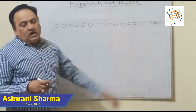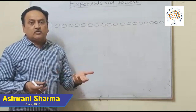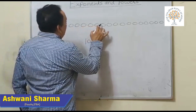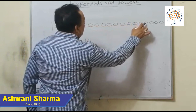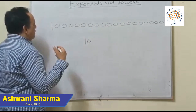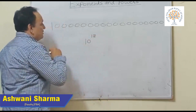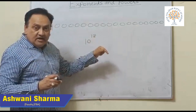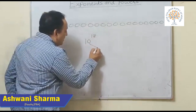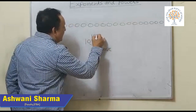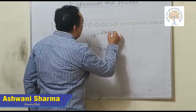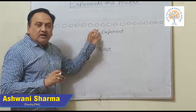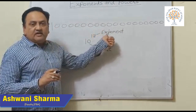Then it is convenient to write it in exponent form. This is called exponents. How can we write it in exponent form? 10 to the power 1, 2, 3... up to 18 — meaning there are 18 zeros behind. So we write 10 raised to the power 18. Here 10 is the base and 18 is the exponent.